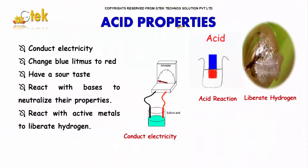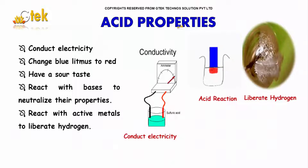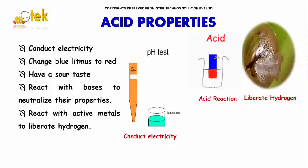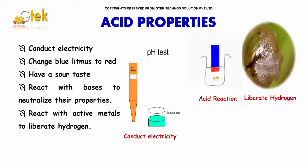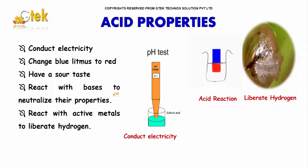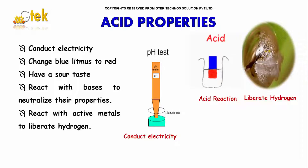Let's discuss the acid properties. Acids conduct electricity. It changes blue litmus paper to red. It has a sour taste. It reacts with bases to neutralize their properties, and reacts with certain metals to liberate hydrogen.